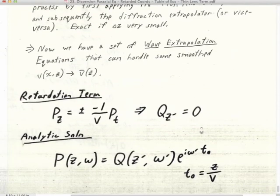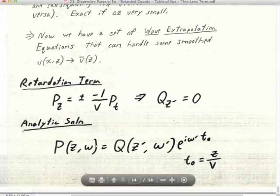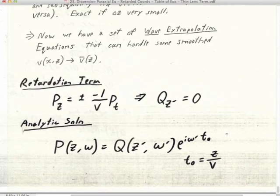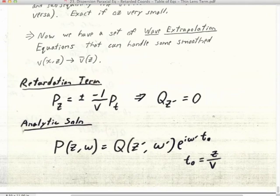In practice, at each z step of downward continuation, we split the process by first applying the thin lens extrapolator and then subsequently the diffraction extrapolator — or we could do it the other way around. So long as our z steps are small, it works just fine. We now have a set of wave extrapolation equations that can handle some smooth laterally variable velocity — where v(x,z) is close to the horizontally averaged v-bar(z). We are ready now to get into finite differencing and figure out how we can actually solve these equations.